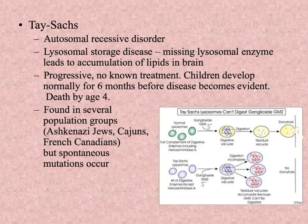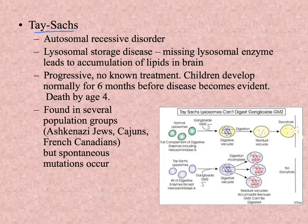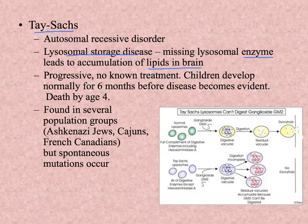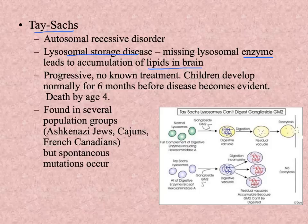Another inborn error of metabolism that unfortunately cannot be treated at the moment is Tay-Sachs disease, also an autosomal recessive disorder. It is known as a lysosomal storage disease — it is missing an enzyme in the lysosome, so things that should be broken down cannot be, and they just accumulate in the cells. Specifically with Tay-Sachs, a particular lipid accumulates in brain cells, squashing the neurons. As this fat continues to build up over time, brain cells get squeezed and will eventually die. It is a progressive disease with no known treatment.